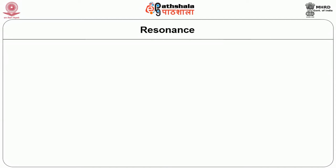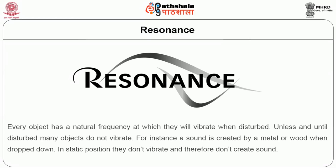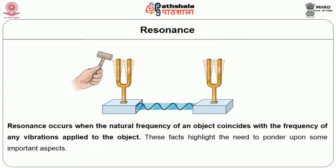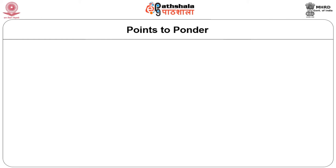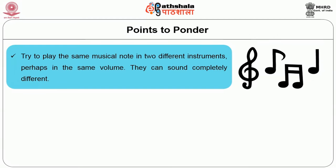Awareness on resonance will help in better comprehension. Every object has a natural frequency at which it will vibrate when disturbed. Unless disturbed, many objects do not vibrate — for instance, a sound is created by metal or wood when dropped, but in static position they do not vibrate and therefore do not create sound. Resonance occurs when the natural frequency of an object coincides with the frequency of any vibrations applied to the object.